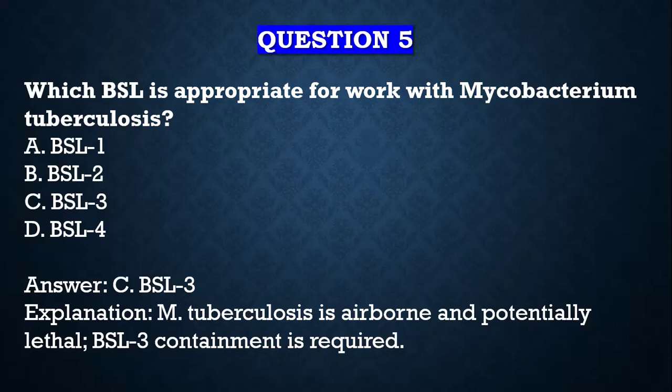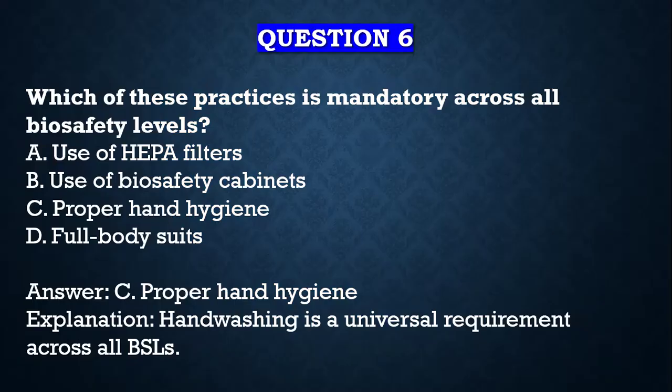Question number five: which BSL is appropriate for work with Mycobacterium tuberculosis? Please, if you are writing any of these agents, make sure they're italicized. A) BSL1, B) BSL2, C) BSL3, D) BSL4. Your answer is BSL3, because Mycobacterium tuberculosis is airborne and potentially lethal, so BSL3 containment is required.